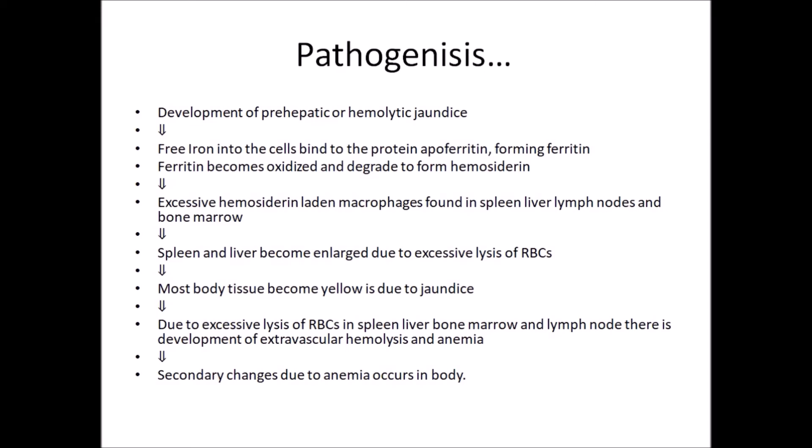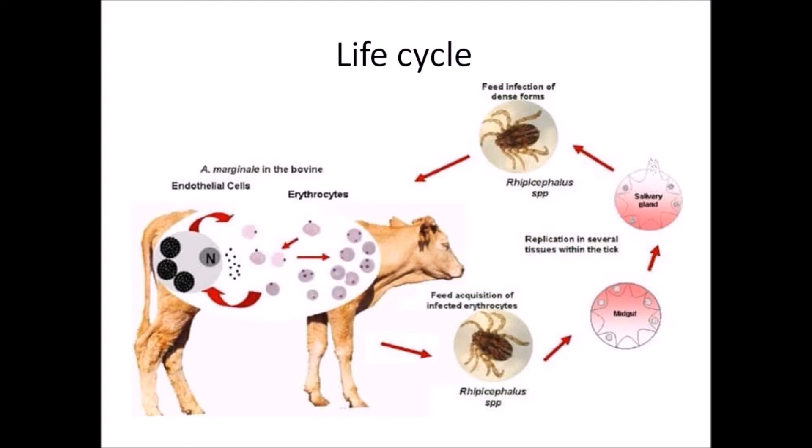Free iron within the cell binds to the protein apoferritin, forming ferritin. Ferritin becomes oxidized and degrades to form hemosiderin. Excessive hemosiderin-laden macrophages are found in the spleen, lymph nodes and bone marrow. The spleen and liver become enlarged due to excessive lysis of RBCs. Most body tissues become yellow due to jaundice. Due to excessive lysis of RBCs in the spleen, liver, bone marrow and lymph nodes, there is development of extravascular hemolysis and anemia, followed by secondary changes due to anemia.